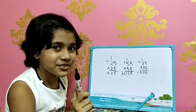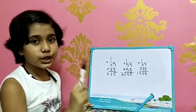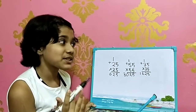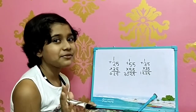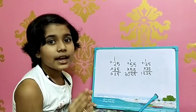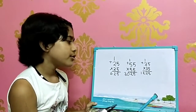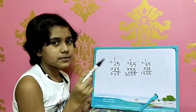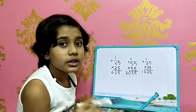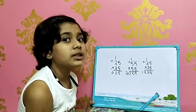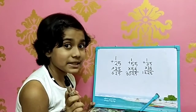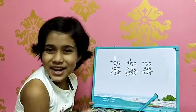So the answer of 35 multiplied by 35 is 1225. It's very easy — a useful mathematical trick! Now let's move on to the next mathematical trick.